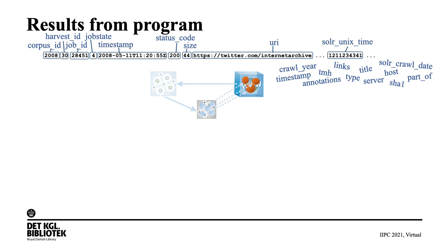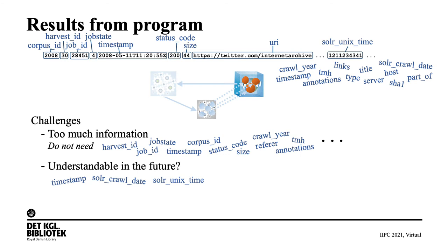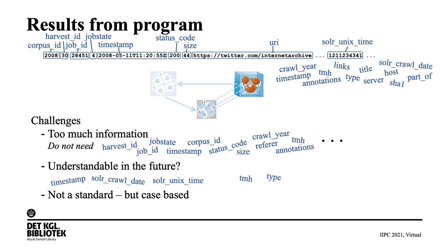If we look at the results from the extraction program, these consist of lines for each of the web elements. One challenge is there is a lot more information than we need, which takes up space. To make it understandable and usable in the future, it also requires documentation of what the different parts of the lines mean. We actually experienced how hard it can be even just half a year after the results were made — for instance, what is the difference between the different timestamps and dates, and what do TMH and type mean? And it is not a standard format. We therefore do not want to preserve it this way.